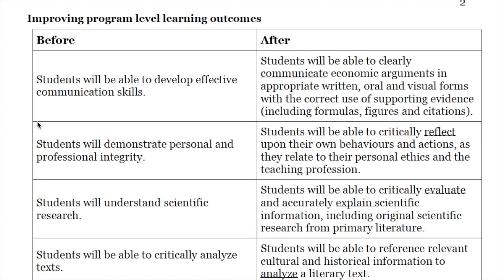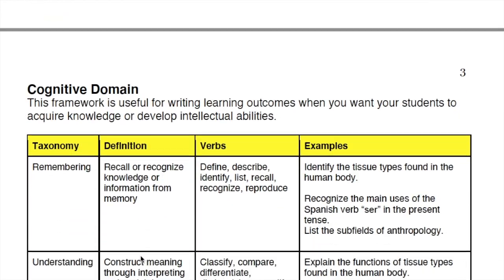When you look at this resource, you'll see some before-and-afters that show common ways to improve learning outcomes. One of the biggest ways to improve learning outcomes is by carefully choosing the action verb. This means avoiding words like 'know' and 'understand,' which are difficult to measure, in favor of words like communicate, reflect, evaluate, and analyze. It's actually a harder job than you might think to come up with action verbs that are most useful, most descriptive, and give students the best idea about what they're actually going to be asked to do.